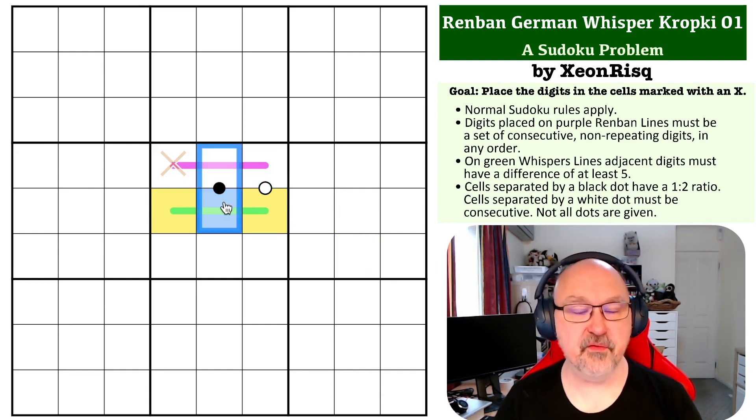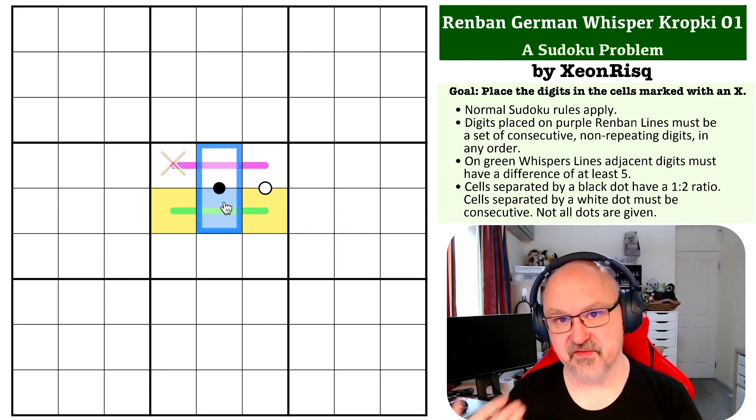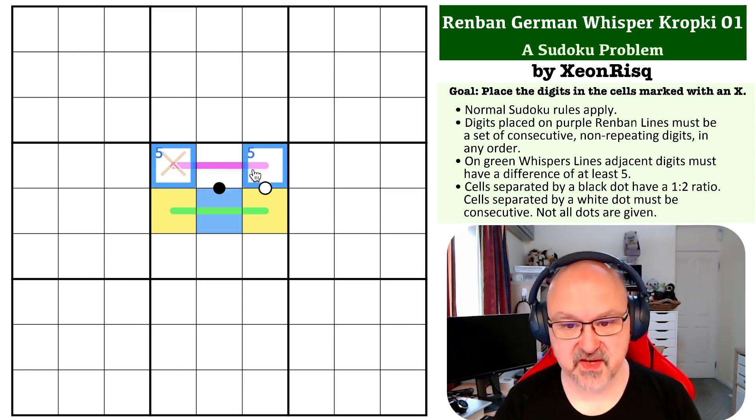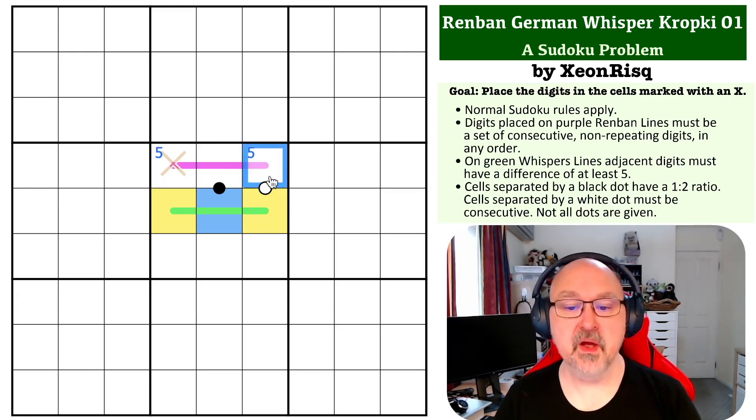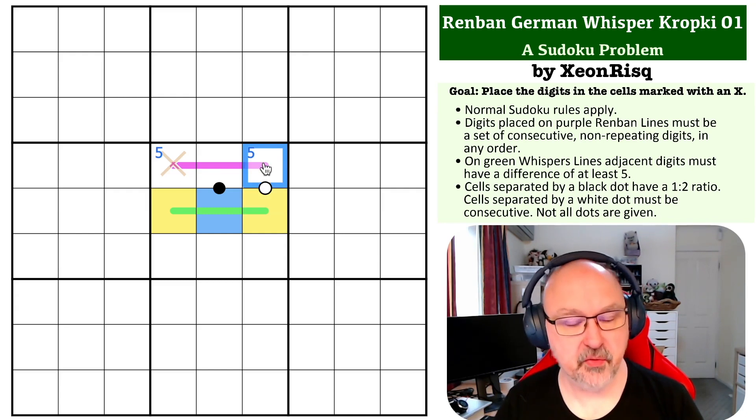Now, you can't put five on a black dot, because half of five is two and a half and double is ten. That doesn't work. So five is in one of these two cells. So the question we now need to ask ourselves is, which one? Well, the most restricted is probably the consecutive dot. Can five go on the consecutive dot?